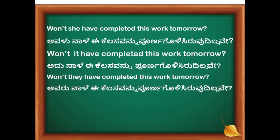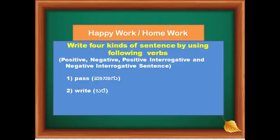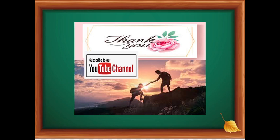This is very important. If you have not subscribed to my channel, please subscribe for the next valuable video. Please share this video to all your friends if you find it good. Now let's go to the happy work or homework. Write four kinds of sentences using the following verbs: pass and write. You have to construct sentences — positive, negative, positive interrogative, and negative interrogative — as we discussed. If you do this exercise, definitely you will get perfection in constructing sentences in future perfect tense. Thank you for watching this video. Please subscribe to our YouTube channel for future notifications. Thank you. Take care and be at home.